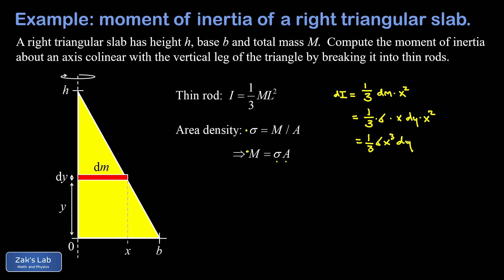Now we have a problem - we can't compute an integral when I have two different variables in this expression. I want to cook this down to a single integration variable to cover this entire triangular slab in these thin rods. What we can do is express the width of each rod in terms of y.